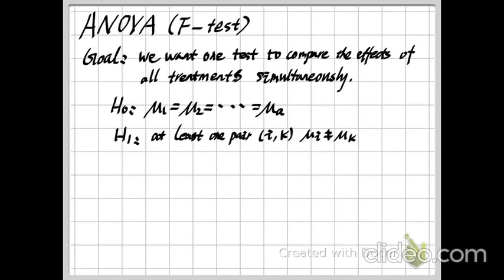To construct the F test, the first thing is we need to talk about some estimations of our data. Previously, whether we do the Z test or T test, we always use the sample mean x-bar to replace the population mean mu, and the sample variance S-squared to replace sigma-squared. Here we will still use the sample mean and sample variance as our estimators.